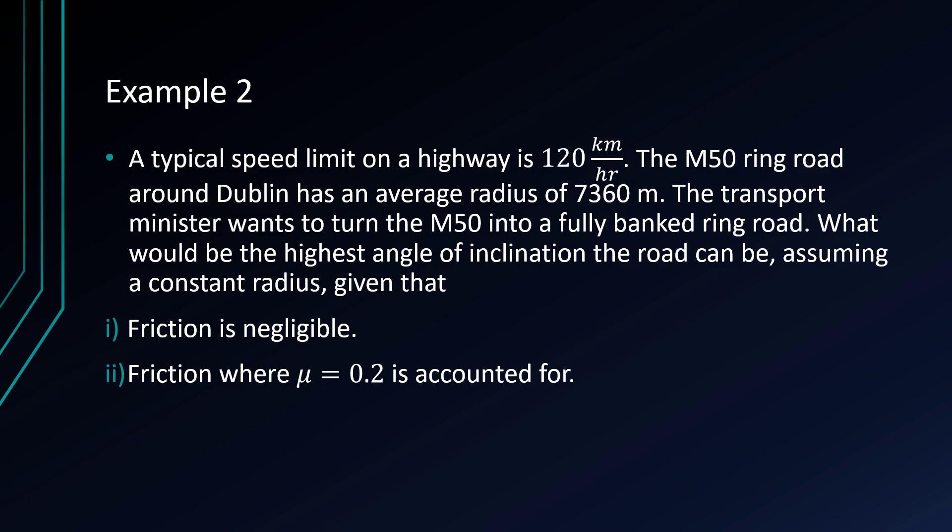The Transport Minister wants to turn the M50 into a fully banked ring road. What would be the highest angle of inclination the road can be, assuming a constant radius, given that firstly the friction is negligible and secondly friction where mu equals 0.2 is accounted for.